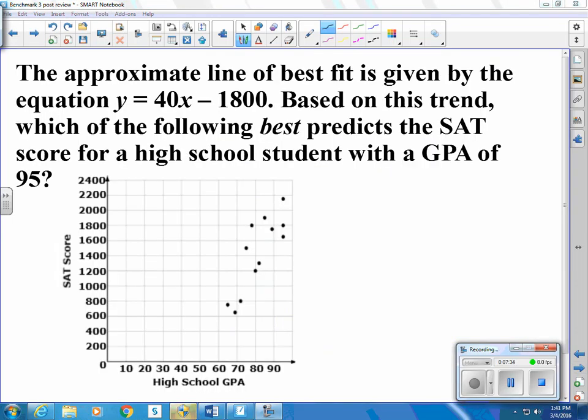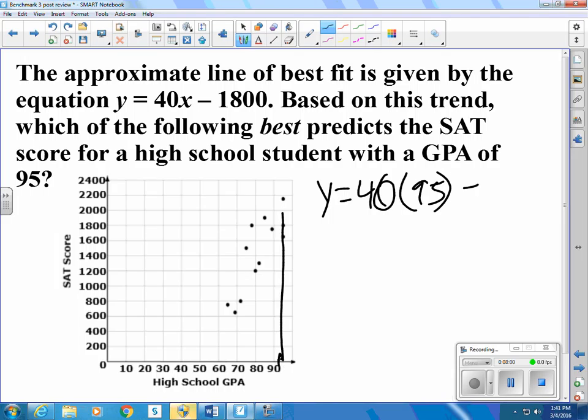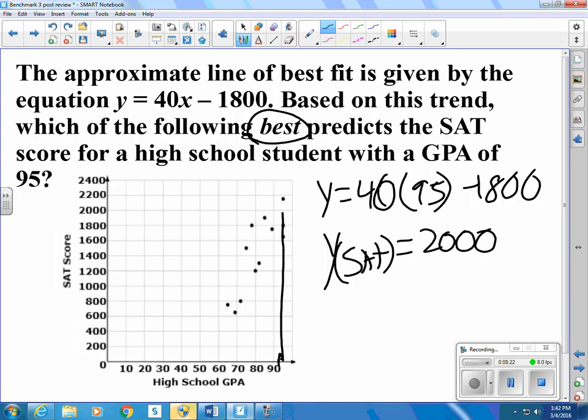So the approximate line of best fit is given by the equation y equals 40x minus 1800. Based on this trend, which of the following best predicts the SAT score for a high school student with a GPA of 95? So a GPA of 95 would be right here. But they actually have the equation for us. All we have to do is say y equals 40 times 95 minus 1800. So that says that the y, which is our SAT, is going to be equal to 2000. Well, that doesn't match any of the selections, but the question said which one is the best, the closest. And that was 1980.